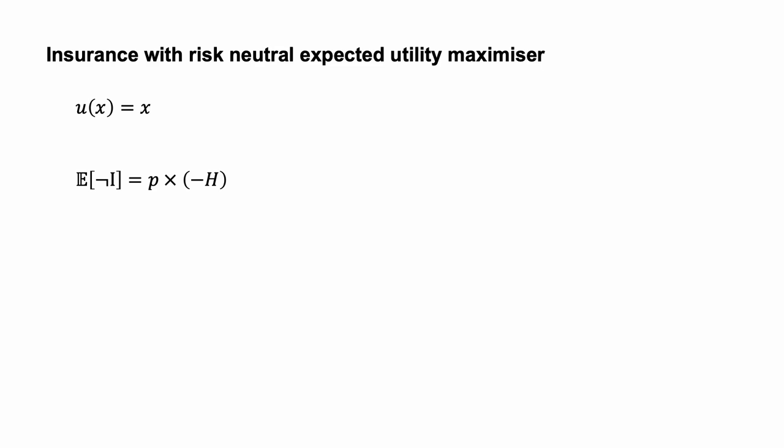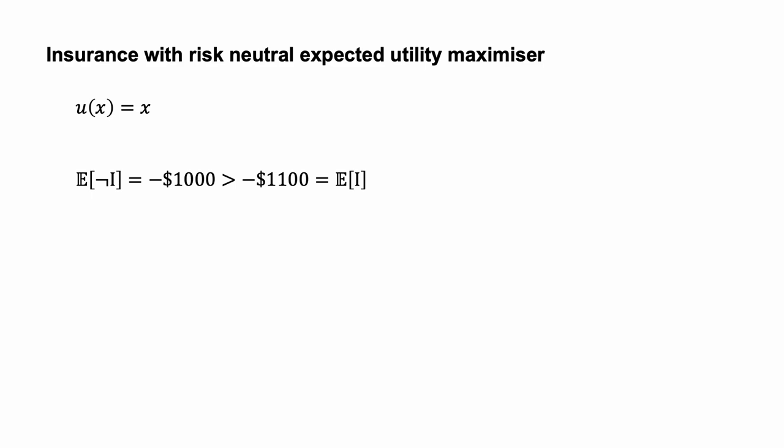If the agent does not purchase insurance, they face the 1 in 1,000 possibility of an uninsured loss. Therefore, the expected value of not purchasing insurance is the probability of loss times the value of the house: E of not I equals P times negative H, which equals negative 0.001 times 1,000,000, equals minus $1,000. The expected value of not purchasing insurance is greater than the expected value of purchasing insurance. Therefore, a risk-neutral agent would not purchase the insurance.